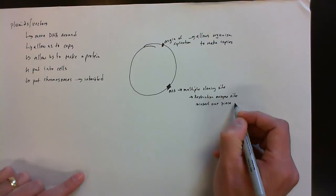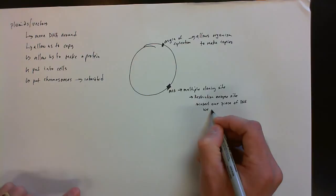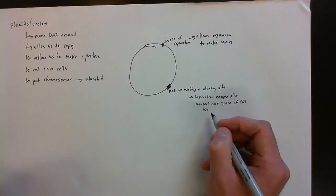So we can take a gene from a human and insert it into this plasmid at the multiple cloning site, and then voila, we're able to copy it into bacteria.